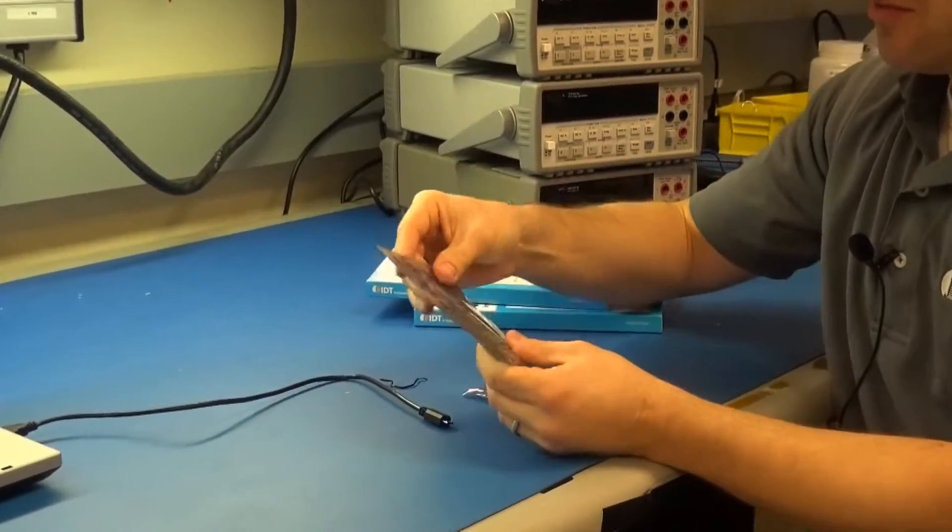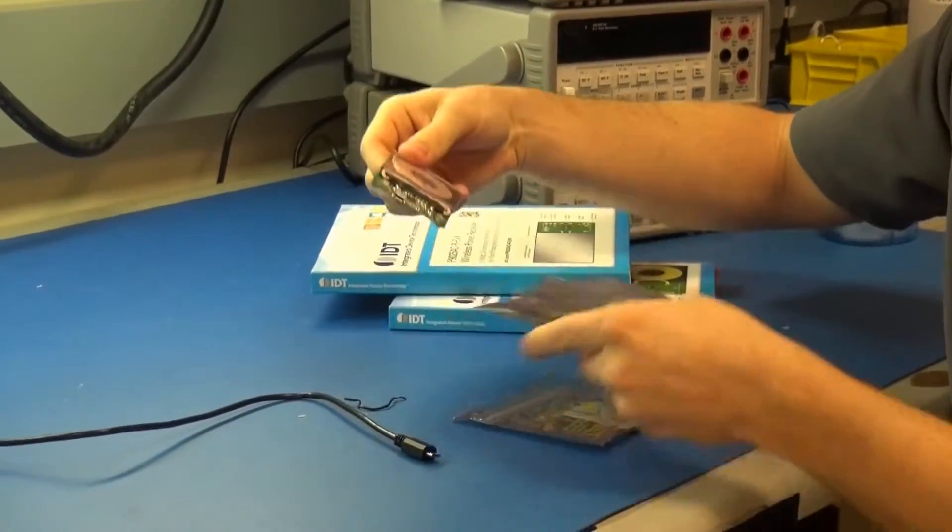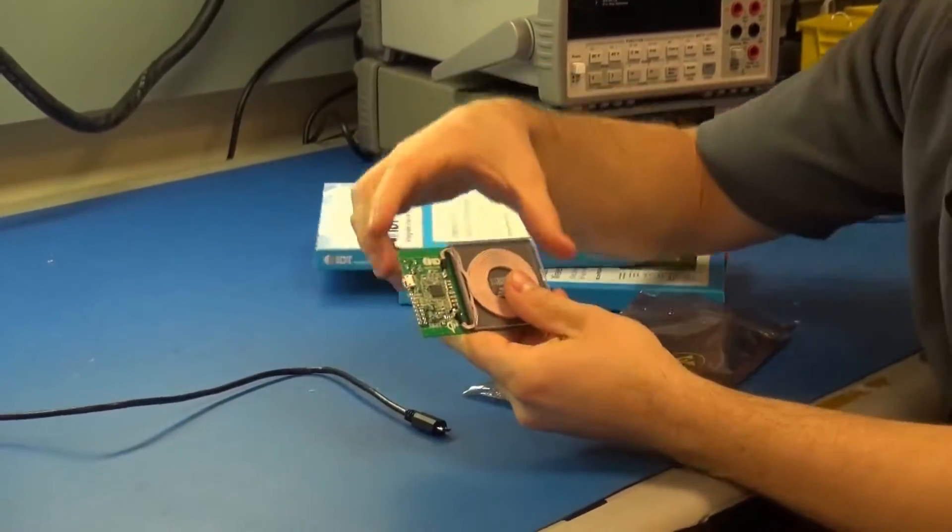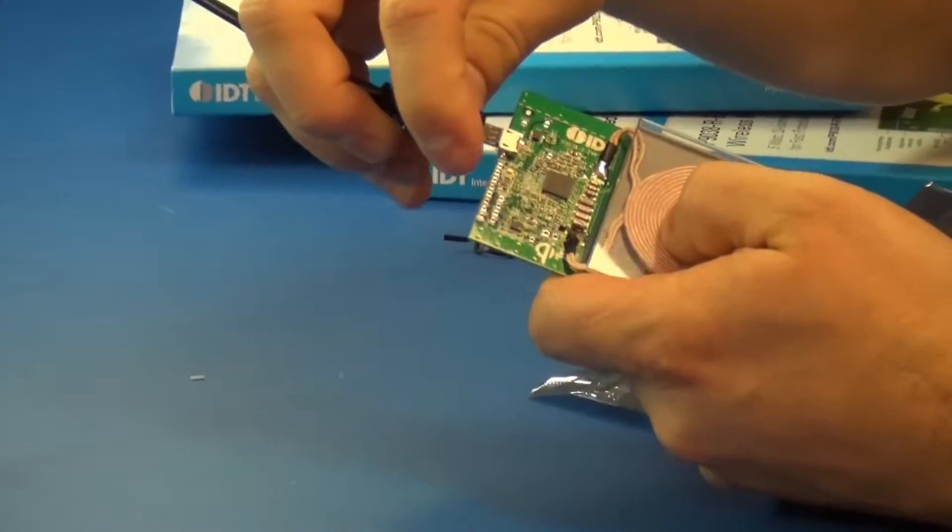We'll take our transmitter board out of this bag. You'll notice on the side of this board, we have a micro USB input. So, you just plug that in.